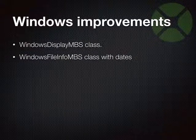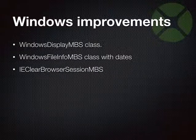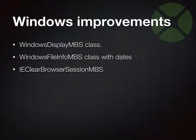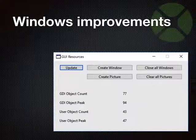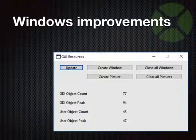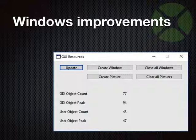We have the file info class giving more details about files — all dates like access date, modification date, and creation date. We have a function to clear the browser session for the HTML viewer so you can reset the cache or clear cookies. We got a class to monitor resource usage so you can monitor your application for handle leaks — because on Windows if there are no more handles available, the application stops drawing.